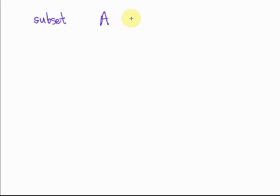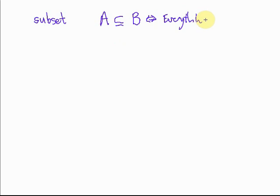Now let's introduce some new terminology. The first bit of terminology is the notion of a subset. Suppose we have two sets A and B. Then A is a subset of B — that's a kind of U on its side with a little equal sign added to the bottom — if everything which is in A is also in B.